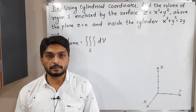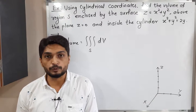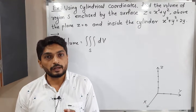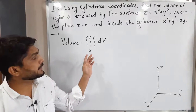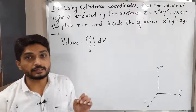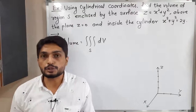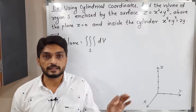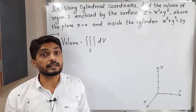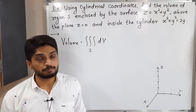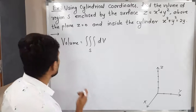Let us discuss this example. We have to find a volume. We know the formula: volume is equal to triple integration over region S of dV, where there is no function and dV means dx dy dz. The important thing is the region S, so let us discuss what the region S is here.